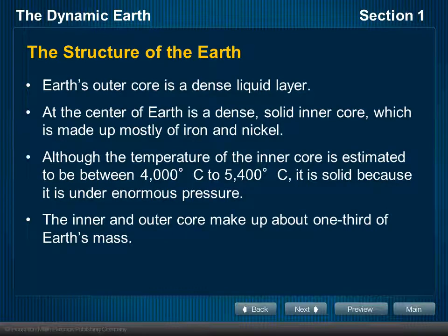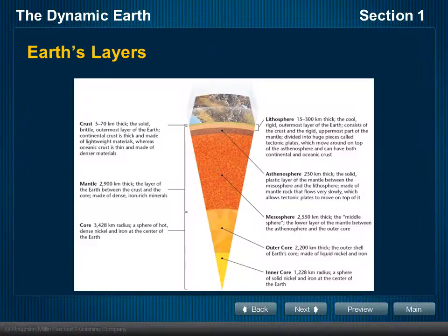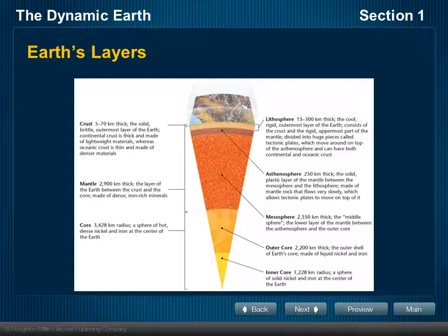The inner and outer core make up about one third of the Earth's mass. This diagram — which I would work hard on becoming very familiar with — shows the two different layouts: the compositional layers on the left showing crust, mantle, and core; and the structural layers on the right showing the lithosphere, asthenosphere, mesosphere, outer core, and inner core. The diagram is done in such a way so you can see where they overlap.